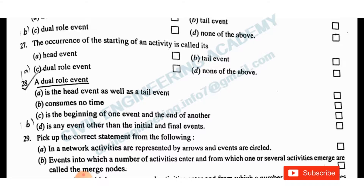The answer here is: a dual role event is any event other than the initial and final events. All events in between the initial and final events are dual role events.